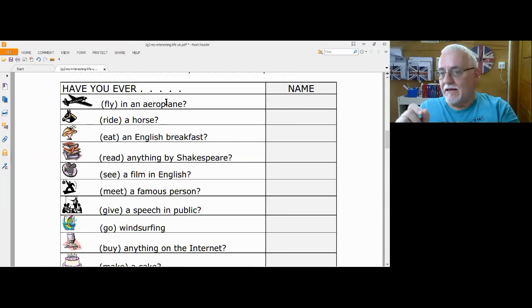So the column that says name is where you would normally ask another student in the class or a family member or friends. So you write their name in there and you could ask them the question, have you ever? We need to change fly into the past participle, which is flown. Have you ever flown in an airplane? And they can write the name of the person and they can give their answer. And these are like yes or no questions. Have you ever flown in an airplane? Yes, I have flown in an airplane or no, I've never. I have never or we can contract it. No, I've never flown in an airplane.